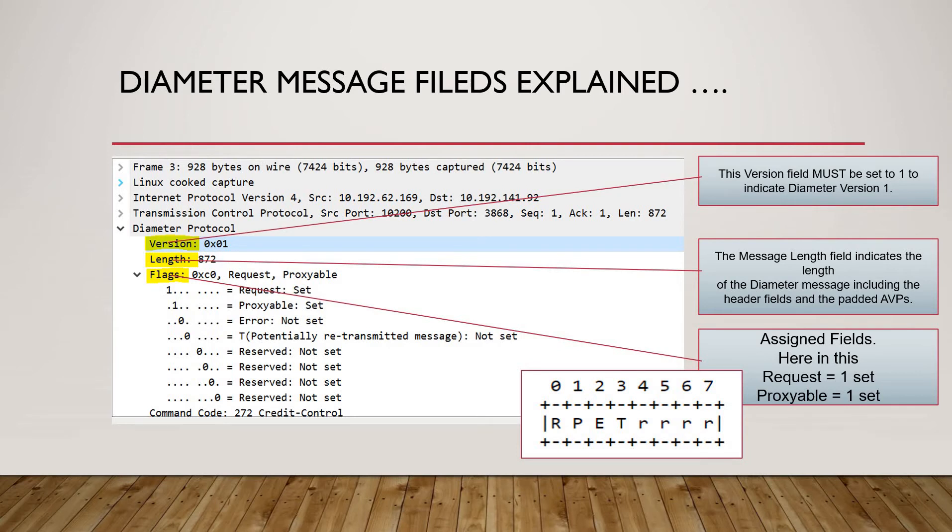Now comes to the flag. Flag is a very important thing. Let me highlight this part. This is the flag. We have this number of flags 0, 1, 2, 3 up to 7. First flag is R, R means request, then P means proxyable, E means error, and T means potentially transmitted message.